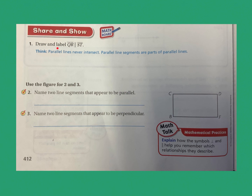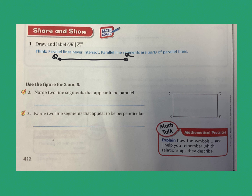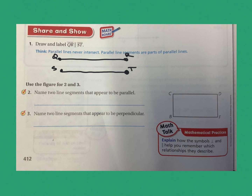Now I'm going to draw and label line segment QR that is parallel to line segment ST. I'll start by drawing line segment QR — Q here and R here. Then I need a line segment ST running alongside it, equal distance apart, never intersecting. The parallel symbol makes sense because these two line segments run side by side and will never cross or intersect.